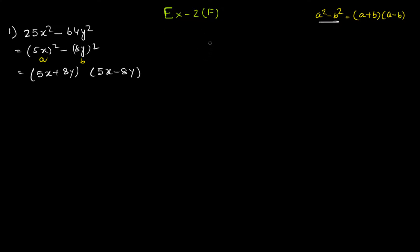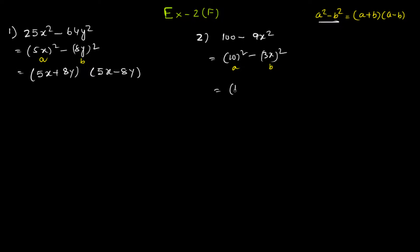The second question is 100 - 9x². This can be written as (10)² - (3x)². Taking 10 as a and 3x as b, we can write: (10 + 3x)(10 - 3x).